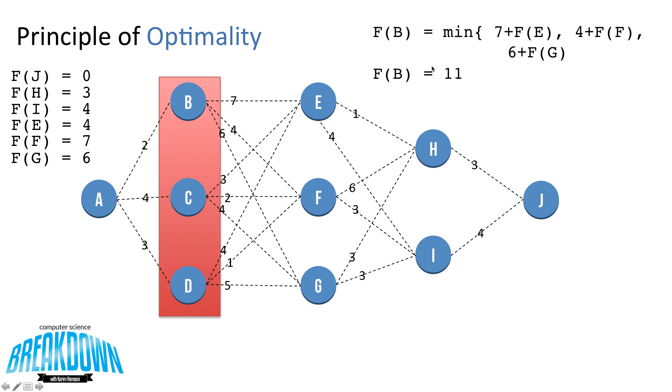Going back a level more, we now have 3 options as there are 3 paths coming out of each of these nodes. So we calculate the min 7 plus f of E, 4 plus f of F, or 6 plus f of G. We know that at f of B, the shortest route to get to f of J is equal to 11.